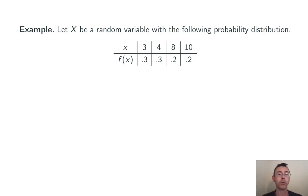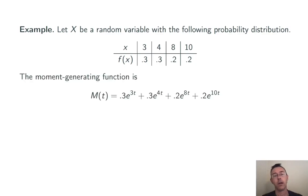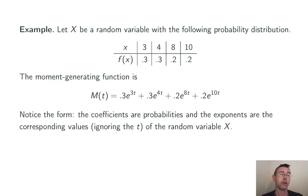Here's a pretty simple random variable x. It has four possible outcomes 3, 4, 8 and 10 and probabilities 0.3, 0.3, 0.2 and 0.2 respectively. Following that definition from the previous slide we get this moment generating function: 0.3e^(3t) plus 0.3e^(4t) and so on. Notice the format here. The coefficients are the probabilities of the different outcomes and the exponents are the outcomes themselves times t in each case.